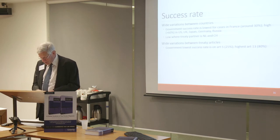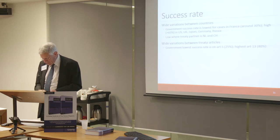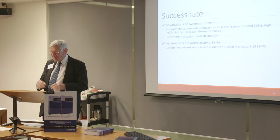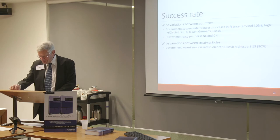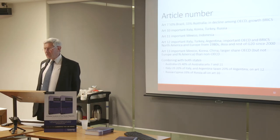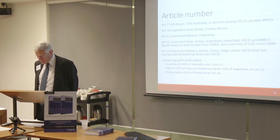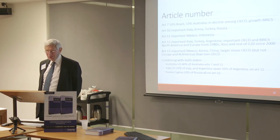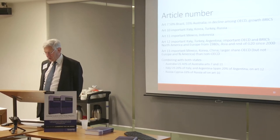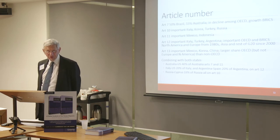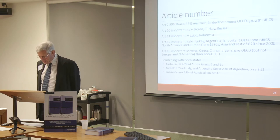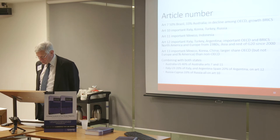Why is there variation between treaty articles as well? Why is the government success rate on Article 5 only 25% and 80% on Article 13? I don't have an answer to this, but I didn't know that was the situation until I read the book, and now I can start thinking about what the consequences of some of these might be. Similarly with the article numbers — the classification of disputes according to article number is again fascinating. Which countries are disputing which articles? In a sense you can expect fewer permanent establishment disputes in OECD countries, and therefore disputes go down, whereas they're much higher in countries where permanent establishments matter much more. I wouldn't have guessed necessarily that Article 10 is important in Italy, Korea, Turkey, and Russia.